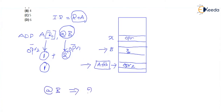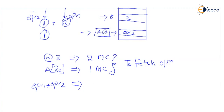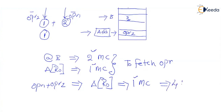@B: two memory cycles. A(R0): one memory cycle — to fetch the operands. After fetching, both operands must be added, and the result (OPR1 + OPR2) must be transferred to A(R0), which requires one more memory cycle. So that is 2 + 1 + 1 = four total memory accesses. Four memory cycles are required to execute this instruction.